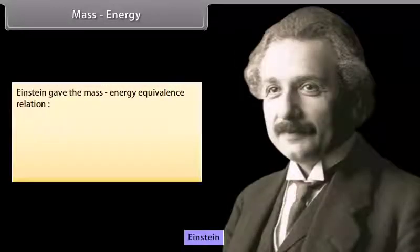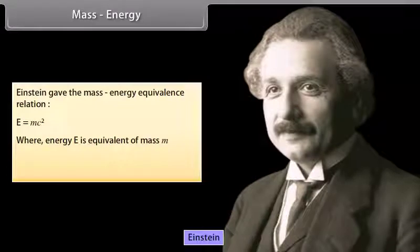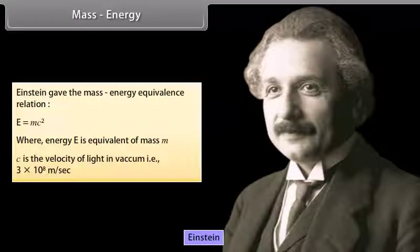Mass energy. Einstein gave the mass energy equivalence relation E is equal to mc square, where energy E is equivalent of mass m. C is the velocity of light in vacuum, that is 3 times 10 to the power 8 m per second.